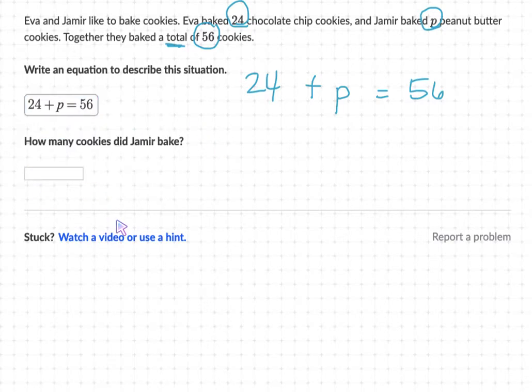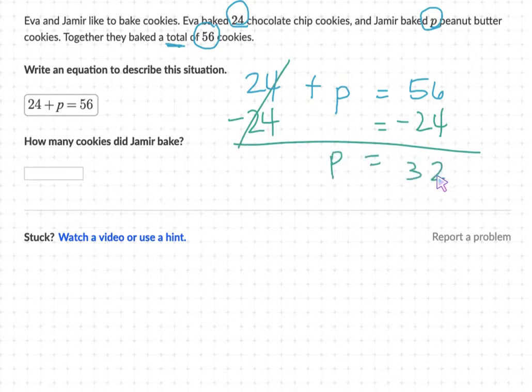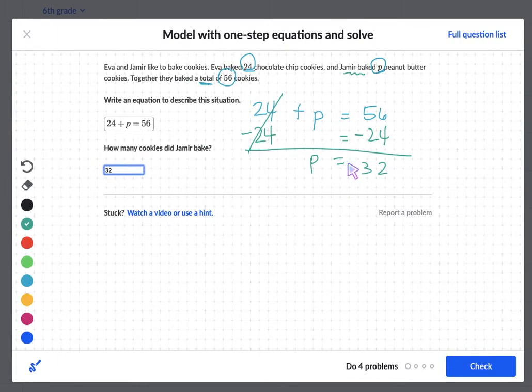Then you have to actually solve it. This is an addition problem. So the inverse operation would be subtraction. So we're going to subtract 24 from both sides to make that true statement. Make sure it's balanced. That cancels out. So P would equal to whatever the subtraction problem is. So P equals 32. P represented how much Jameer baked. So when they want to know how many cookies Jameer baked, we'll just write down 32. So we want to make sure that the answer we get is actually going to answer the problem that they asked us.